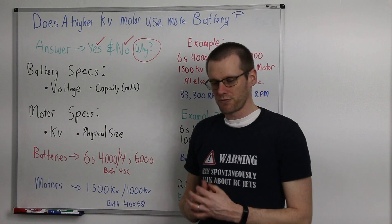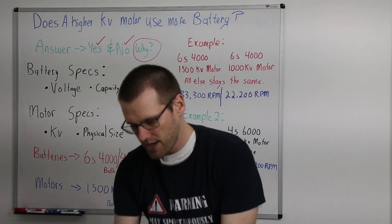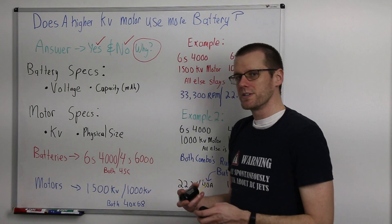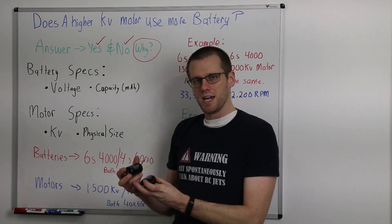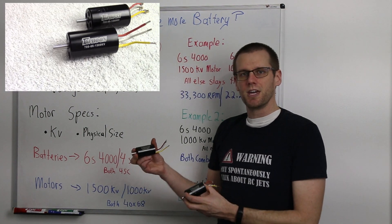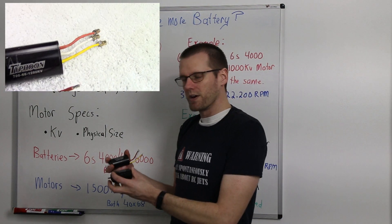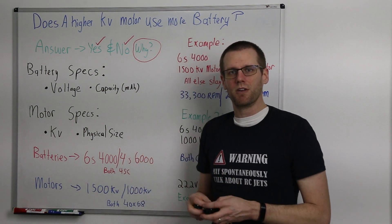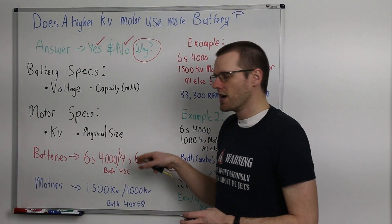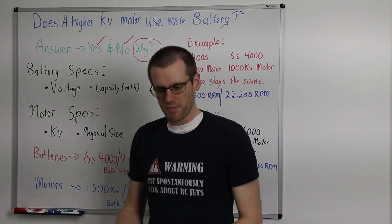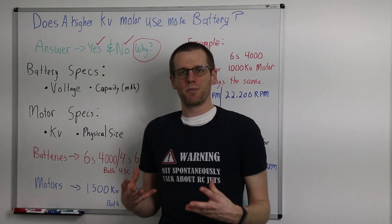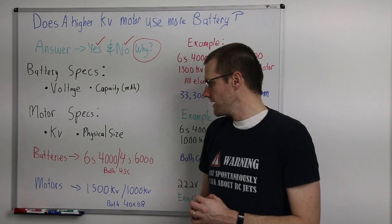Now in terms of the motor, we're going to give some specifications for that as well. So I do have a couple motors here that do represent our specific example. One of them is a 1,500 kV motor, and the other one is an actual 1,200 kV motor. But what we're going to do is we're going to use 1,000 because the numbers are going to come out quite well for us, but it's going to represent the exact same idea.